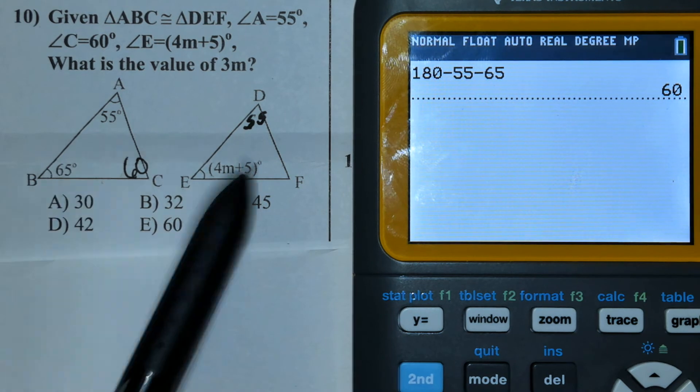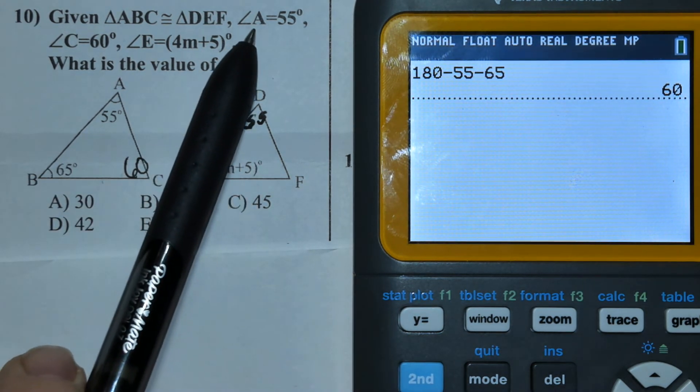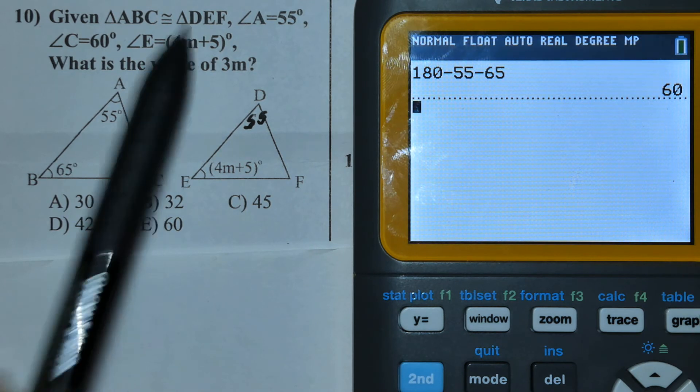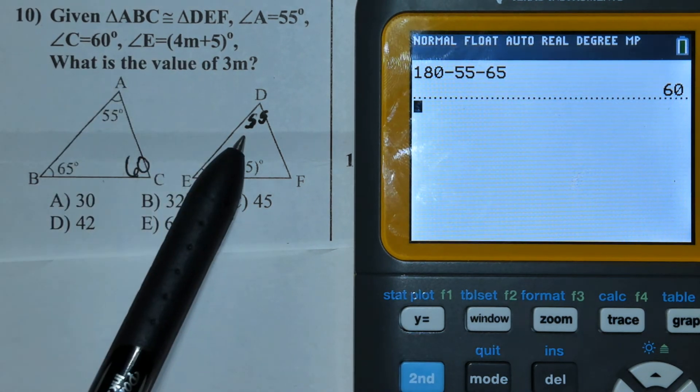So I've marked off what we know. We know these two triangles are equivalent, and so angle A, which is the first letter, needs to be equivalent in angle measurement to D. So if this is 55, so is the next.